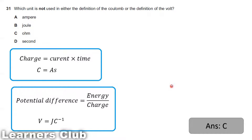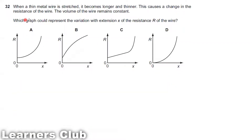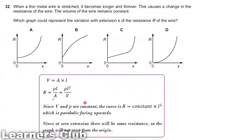In both cases, we are not using resistance or the unit ohm to define coulomb or volt, so the answer is option C. Question 32: When a thin metal wire is stretched it becomes longer and thinner, causing a change in resistance. The volume of the wire remains constant. Resistance equals resistivity times length over area.